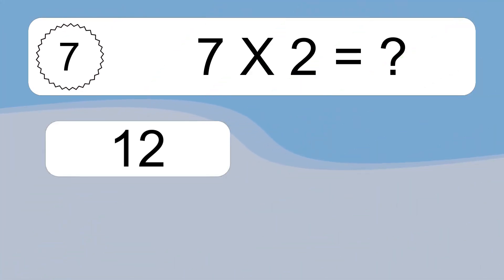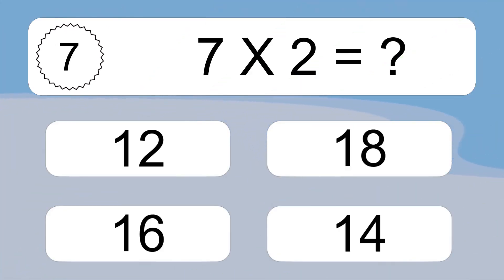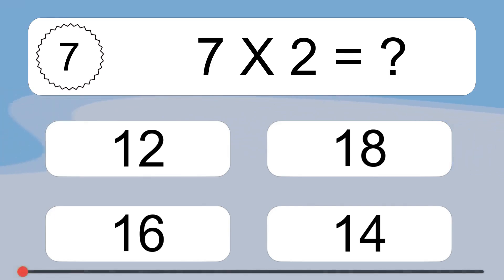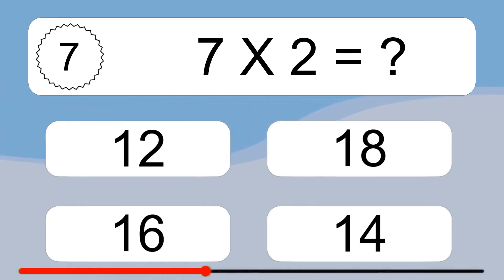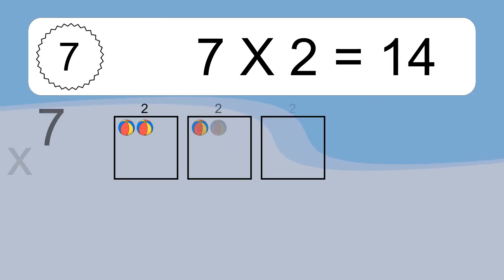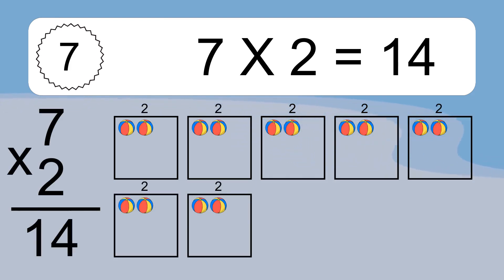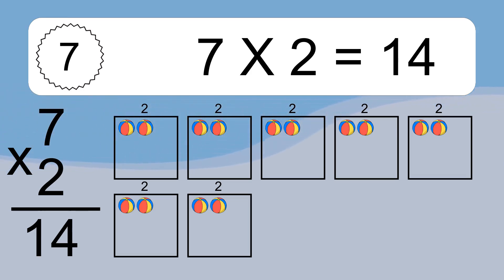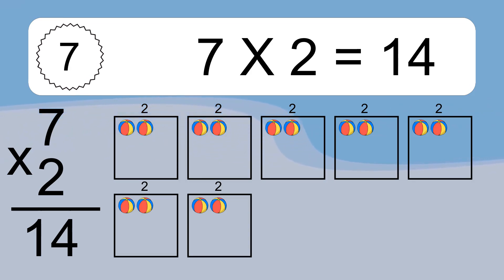7 times 2 equals what? 7 times 2 equals 14. We have 7 boxes, and each box has 2 colorful balls inside. If you count all the balls in all the boxes together, you will have 7 times 2 balls. This equals 14 balls.